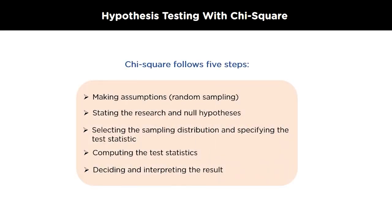The chi-square test statistics follow these five steps. First, we make assumptions about random sampling and state its research and null hypothesis. Then, we select the sampling distribution and specify the test statistics. After that, we compute the test statistics. The value we get is used to decide and interpret the results.